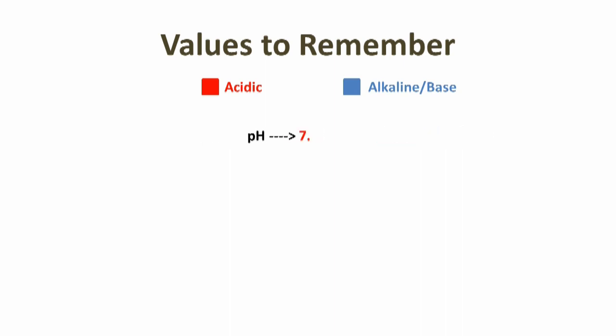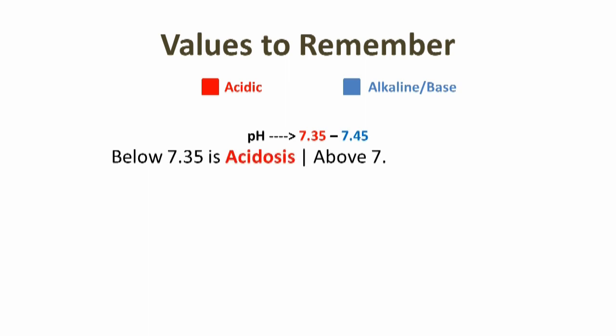The normal value of pH is within 7.35 to 7.45. Below 7.35 is acidosis and above 7.45 is alkalosis. Next is PaCO2. PaCO2 indicates carbon dioxide.